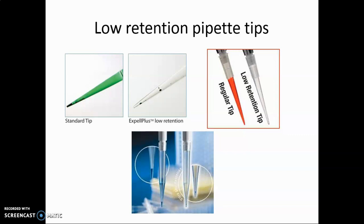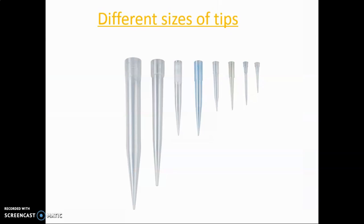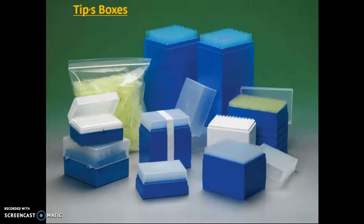Different sizes of tips: there are different types of pipette tips from 1000 microliters to 20 microliters. Tip boxes, holders and replacement trays for disposable pipette tips are autoclavable and can be recycled.